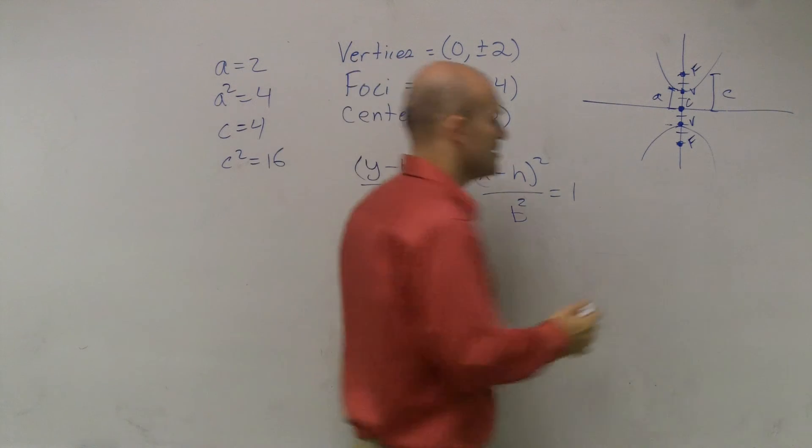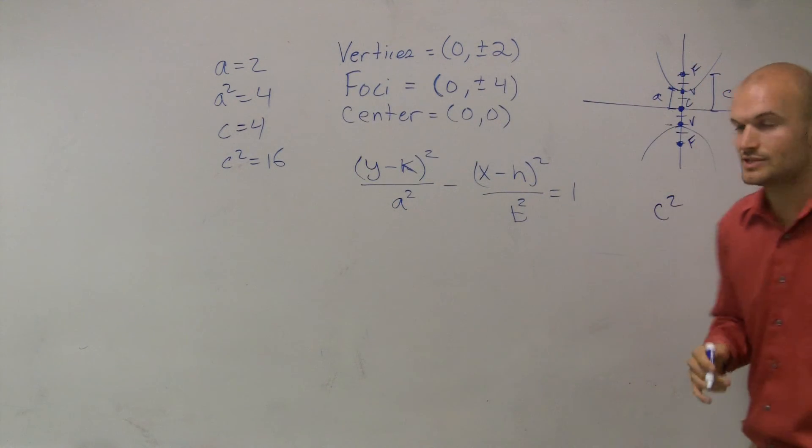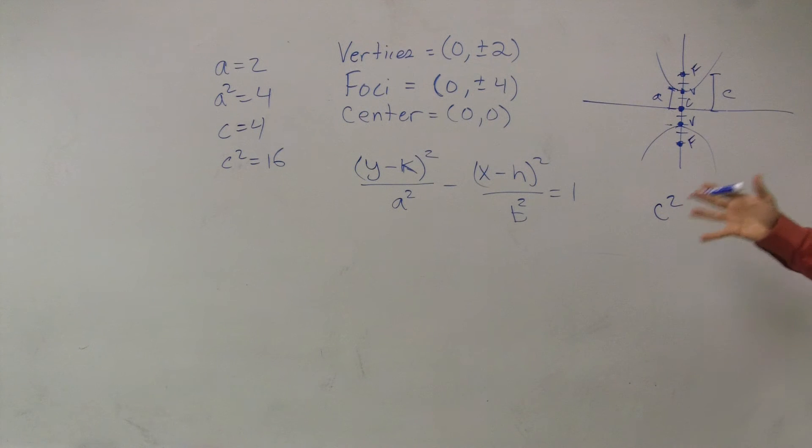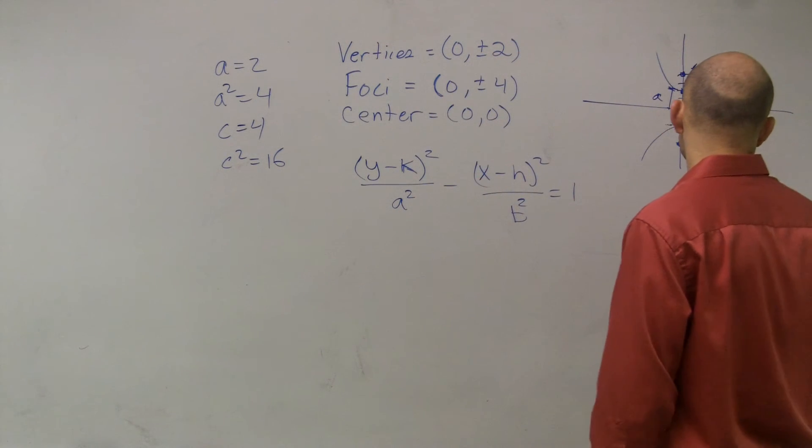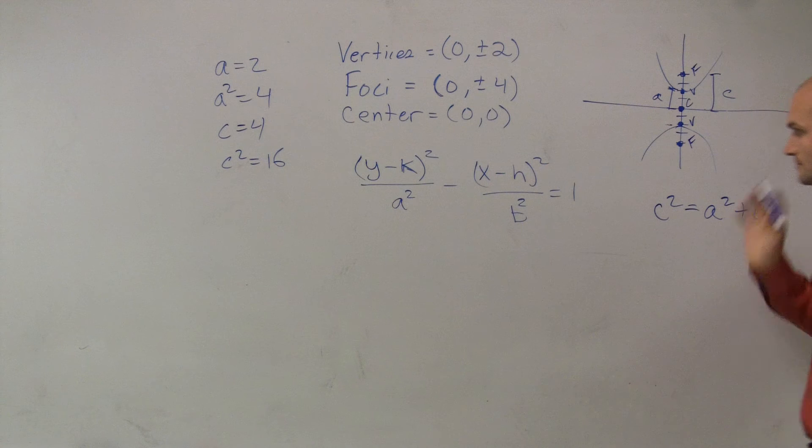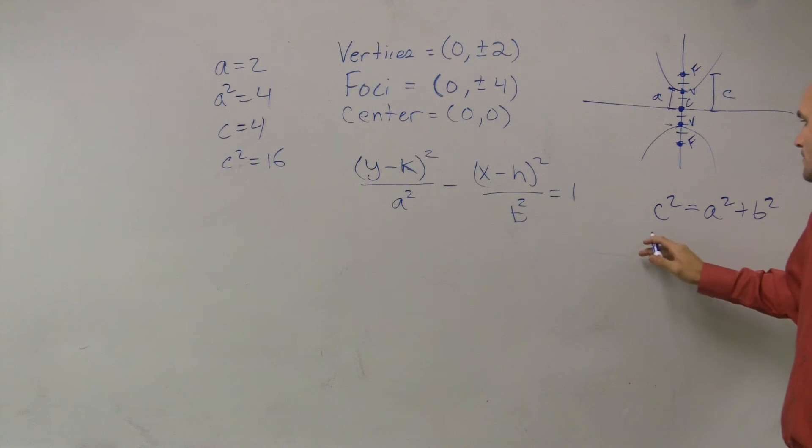Then the last thing we need to remember is how do these all relate to each other? The distance for a, b, and c on a hyperbola is very similar, except instead of subtracting, now we're going to have c² = a² + b². So then we have 16 = 4.